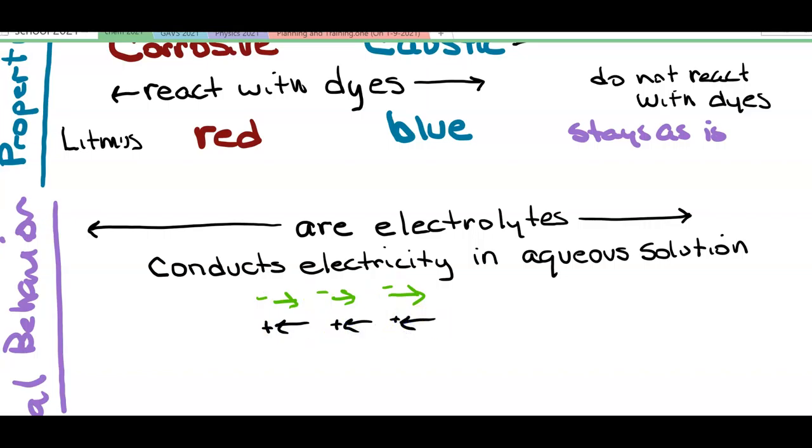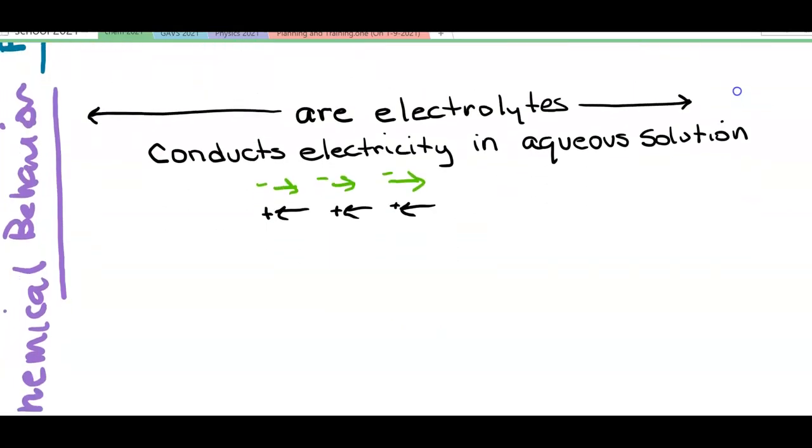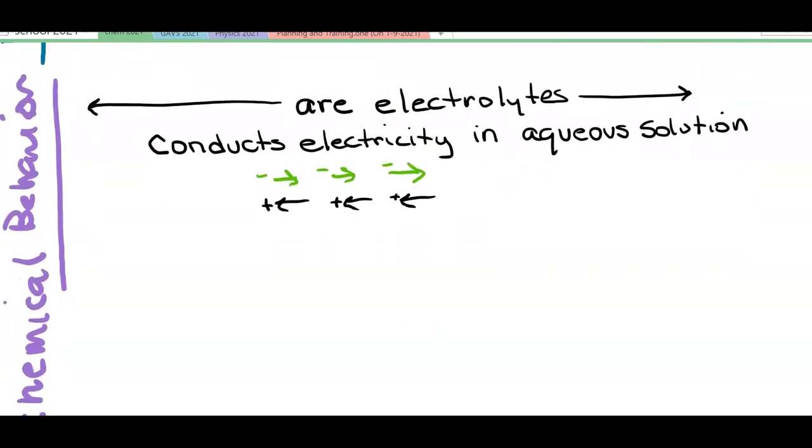So as our understanding became aware of what matter was made of in terms of charged particles, like the nucleus of an atom containing protons with a positive charge and electrons being outside of the nucleus, we started to focus in on what makes an acid an acid, what makes a base a base in terms of their chemical behavior.